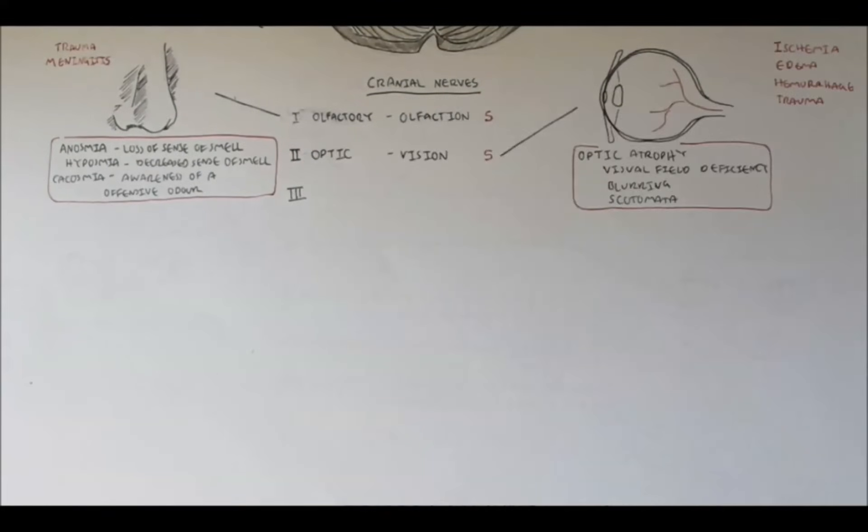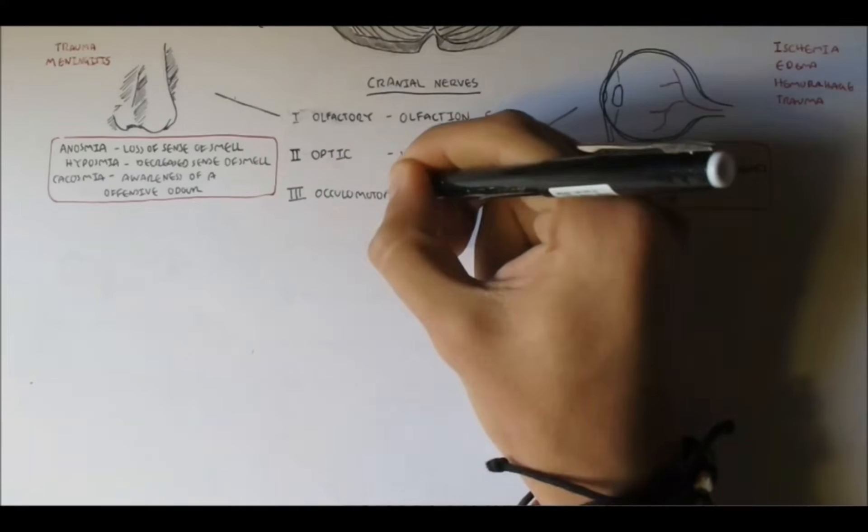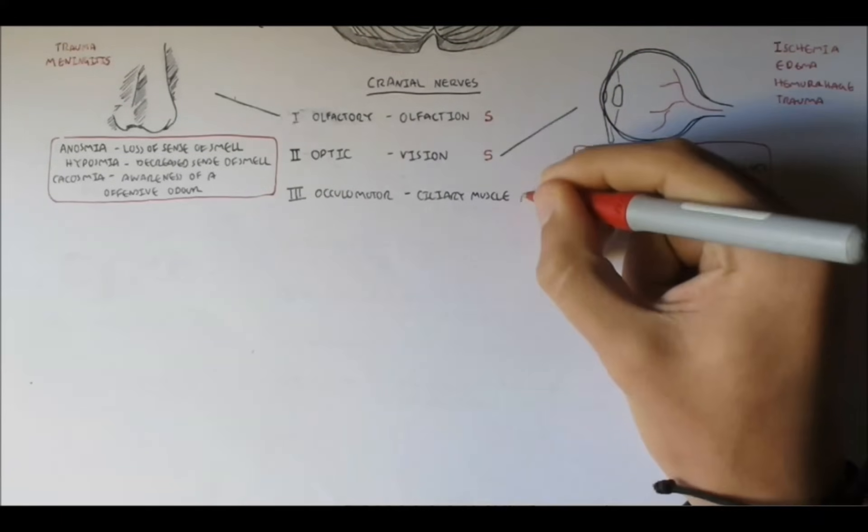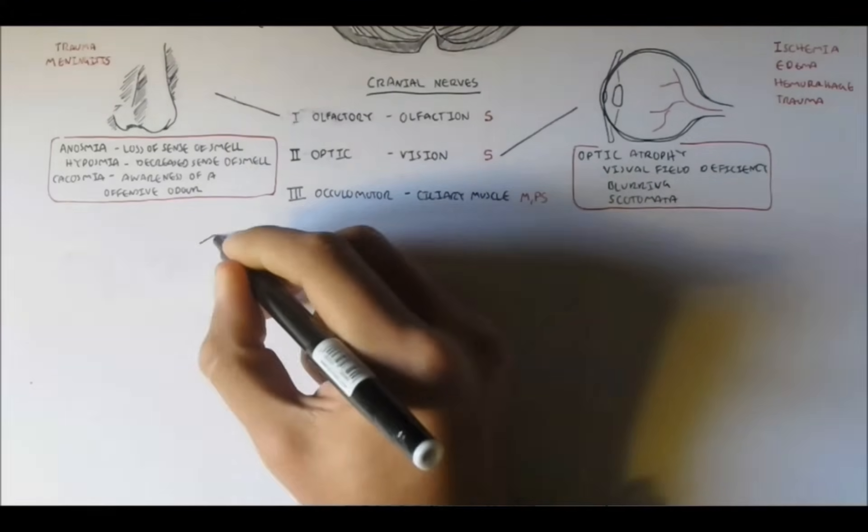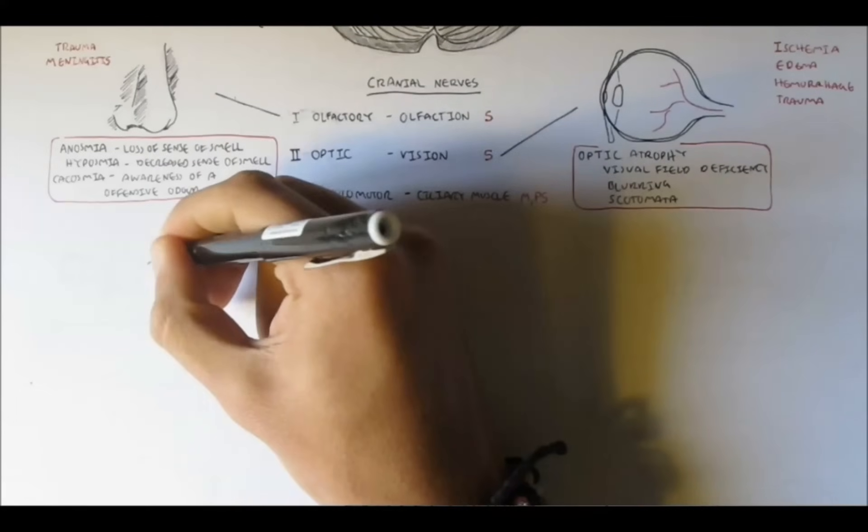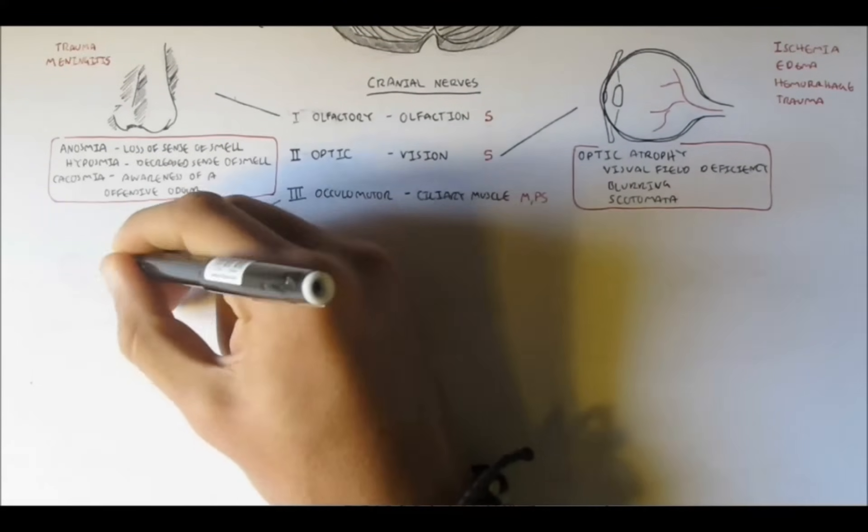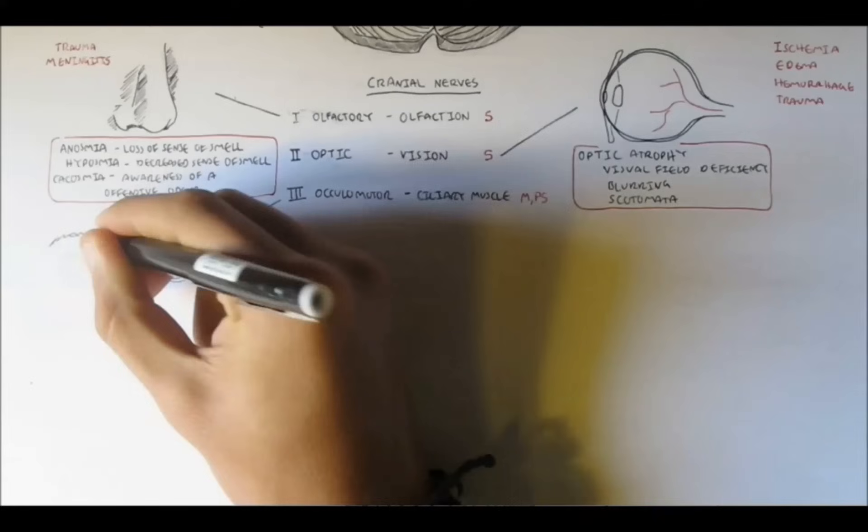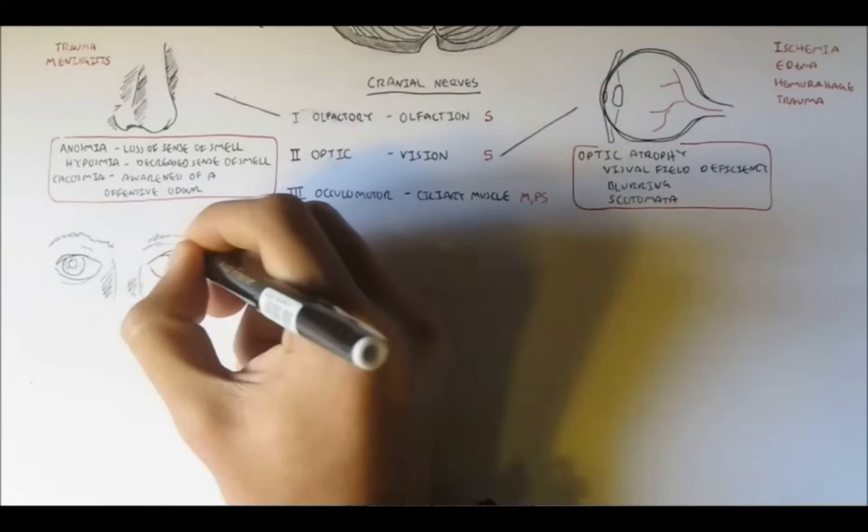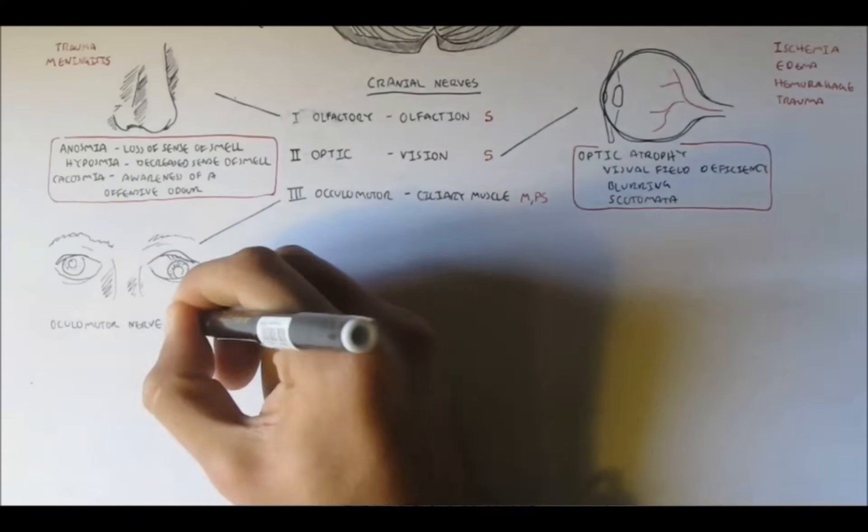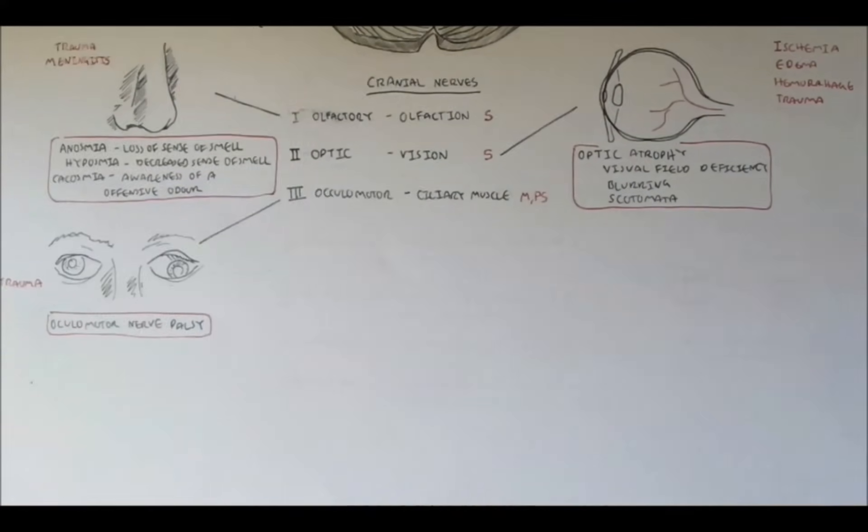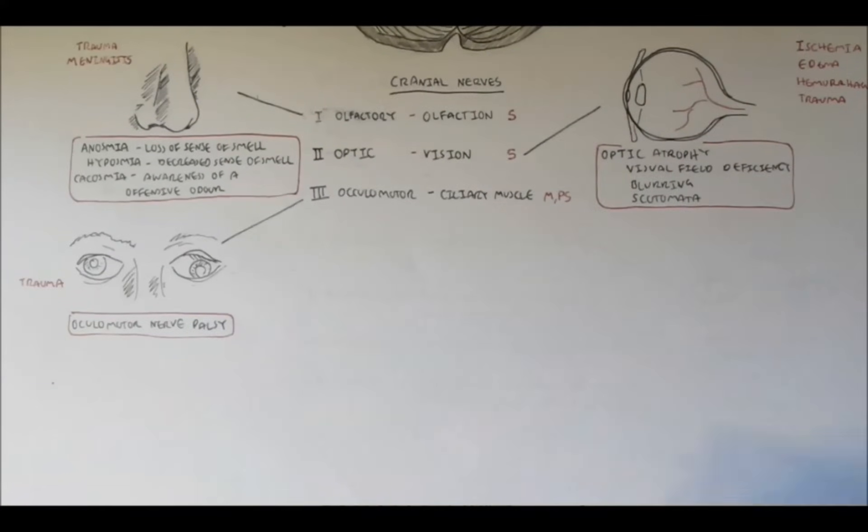Nerve 3 is the oculomotor nerve, which controls the ciliary muscles, which are smooth muscles in the eyes' middle layer. It is responsible for changing the shape of the eyes, particularly the lens, to achieve accommodation for viewing objects. It is a motor nerve and also a parasympathetic nerve. Damage to this nerve can cause double vision known as diplopia, but particularly oculomotor nerve palsy, which is a broad term involving the eyes. Eyes usually look like this when damaged. There is deviation down and out of the eyes. Causes can be from trauma.